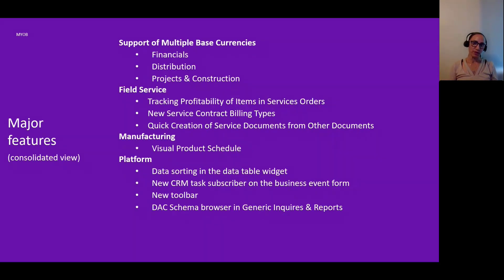Here is a breakdown of the major features released. We have support for multi-base currencies across financials, distribution, projects, and construction. In field service: tracking profitability of items in a service order, new service contract billing types, and quick create of service documents. In manufacturing: a visual product scheduler. Platform changes include data sorting in the table widget, a new CRM task subscriber on the business event form, and a new toolbar and DAX schema browser in the GI and reports.